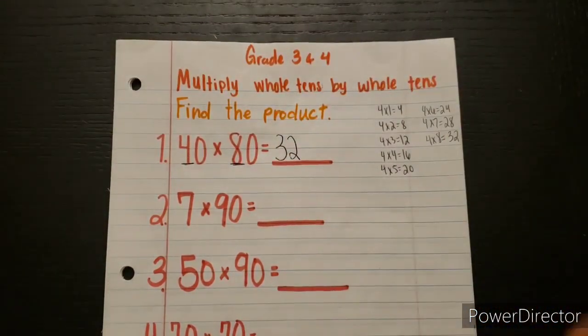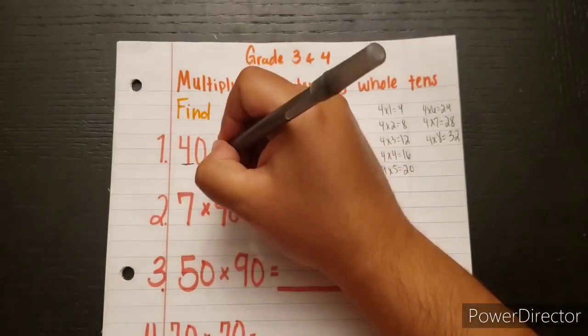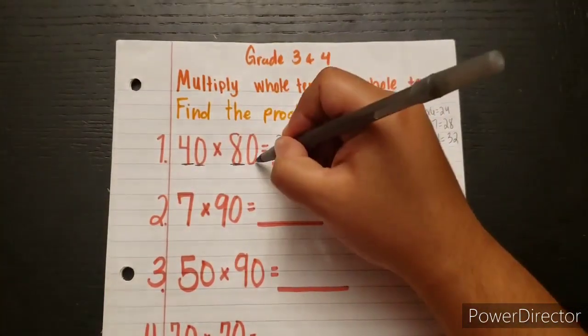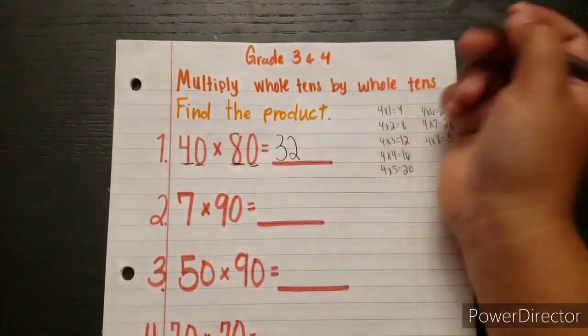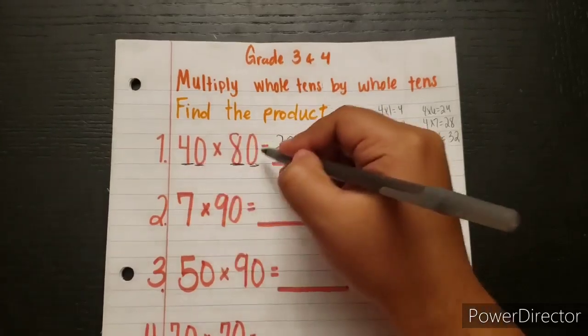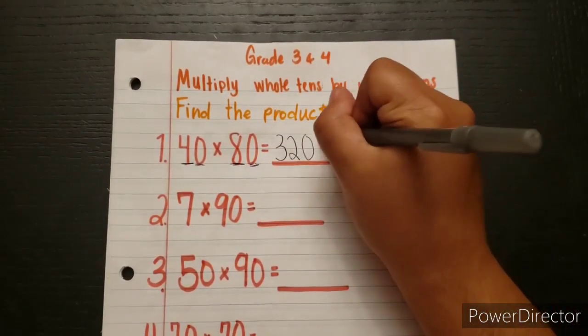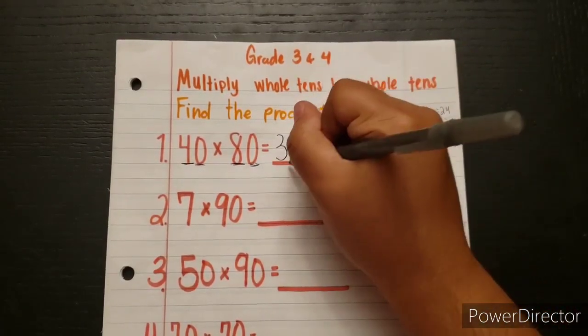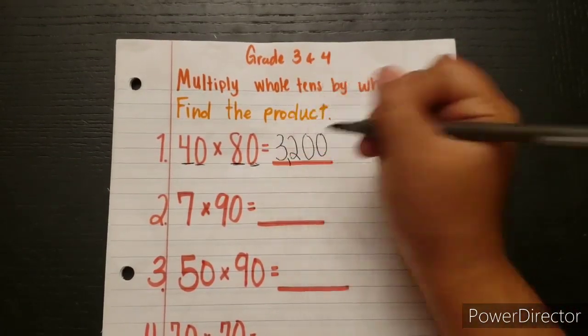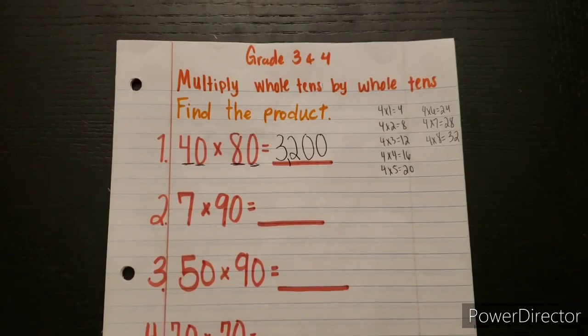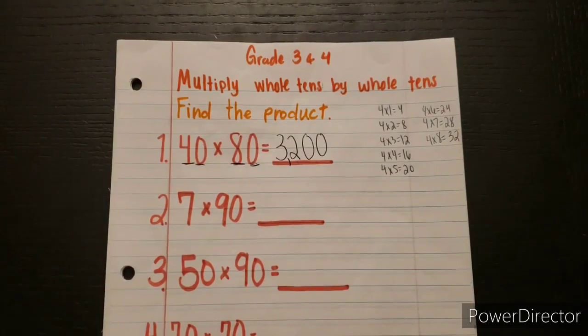Next, all you'd have to do is add these zeros at the end — that's 2 zeros. So 40 times 80 equals 3,200.